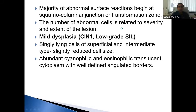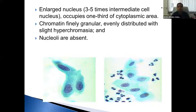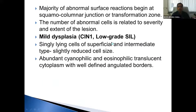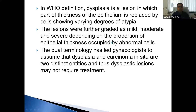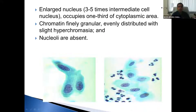Starting with mild dysplasia, also called low-grade SIL: the cells are singly lined and the majority are either superficial or intermediate cells. The cell size is slightly reduced compared to normal cells on the Pap smear. The cytoplasm is abundant, cyanophilic or eosinophilic. The nucleus is enlarged, around 3 to 5 times the nucleus of the intermediate cell. The chromatin is finely granular and evenly distributed with very slight hyperchromasia. Nucleoli are absent.